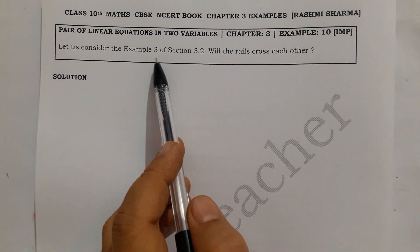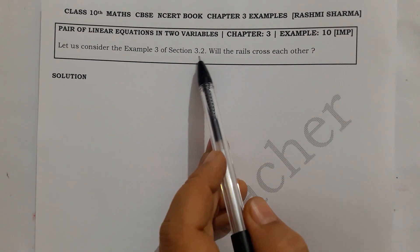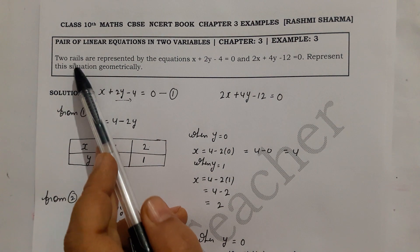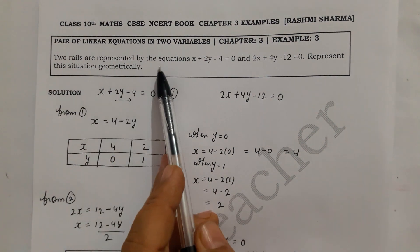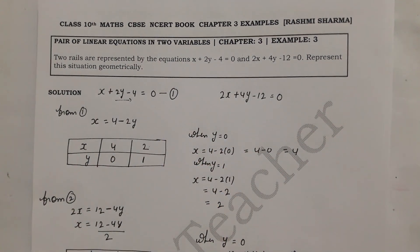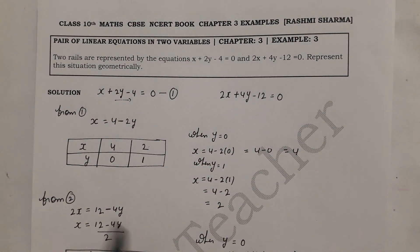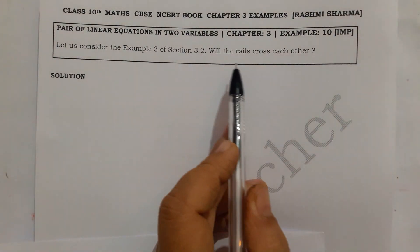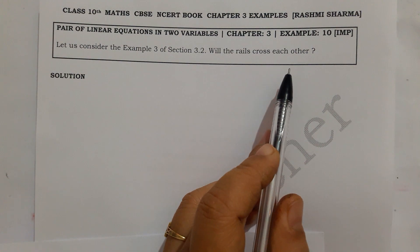The question is: consider Example 3 of Section 3.2 — will the rails cross each other? Two rails are represented by two equations. We have already solved this geometrically or graphically. Here we will solve it by substitution method and determine whether the rails will cross.